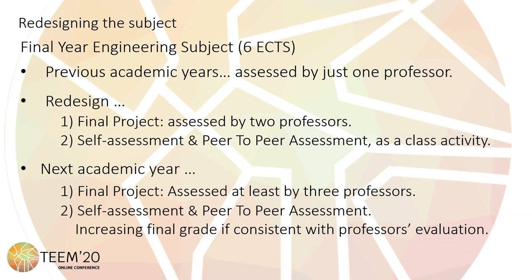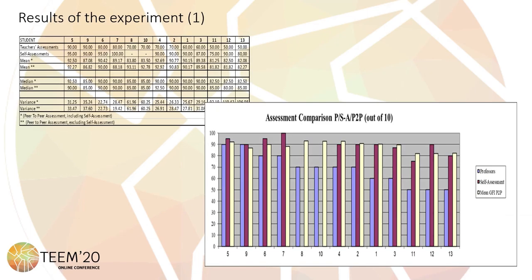To include both options — self-assessment and peer-to-peer assessment — as an effective assessing mechanism to be implemented next year in order to develop competences in the context of formative assessment. Students were asked to evaluate themselves and their peers as a class activity on the last day of class. All enrolled participants in the subject participated in the activity, and the results are shown in this slide. Peer-to-peer assessment was performed through an overall evaluation of the project and also by grading different features as shown in the next slide.